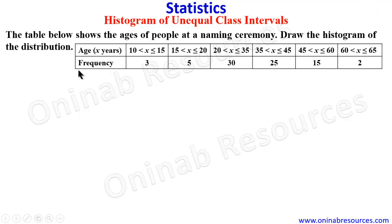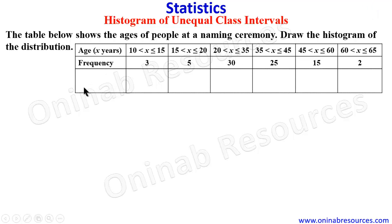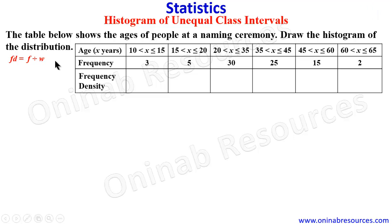To draw the histogram of a distribution with unequal class intervals, we are going to draw age against the frequency density. So we create a new column and name it frequency density. To calculate frequency density, it is the frequency divided by the class width.